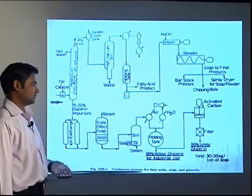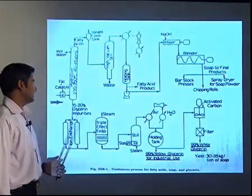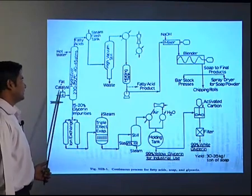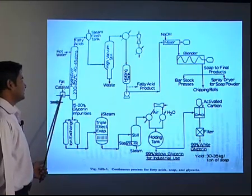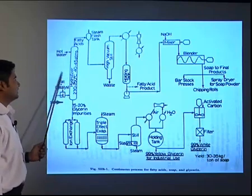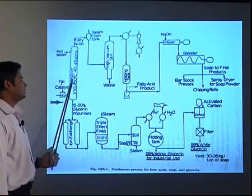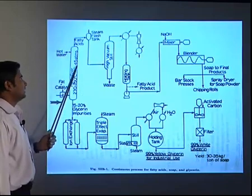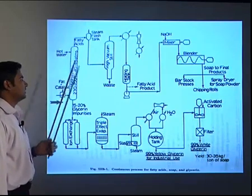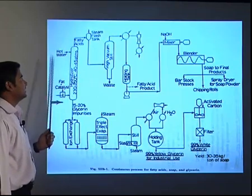Here is the continuous process for fatty acids, soap and glycerin. The fat and catalyst are blended together and then sent to the hydrolyzer, which is maintained at 230 to 250 degree centigrade and high pressure of 40 atmospheres. That is why it is called the high pressure fat splitting process.